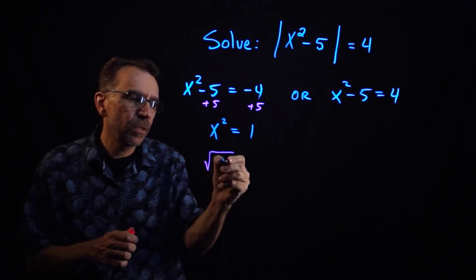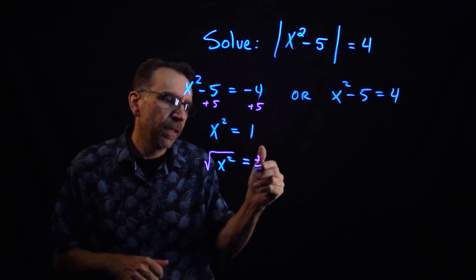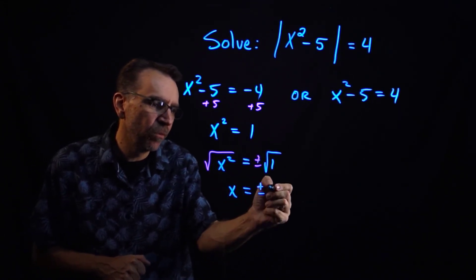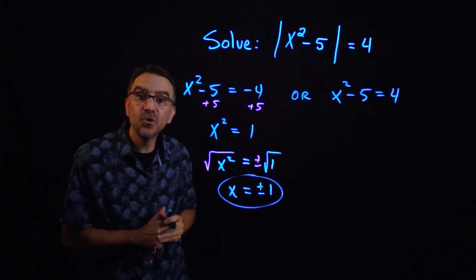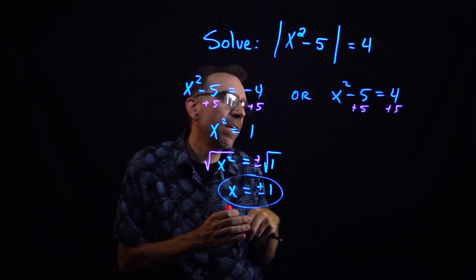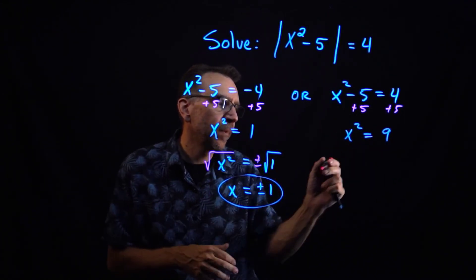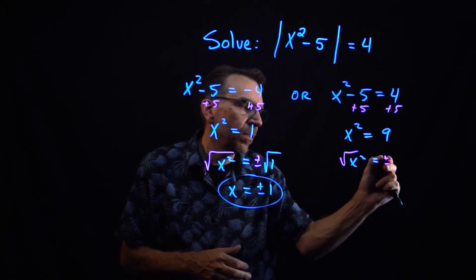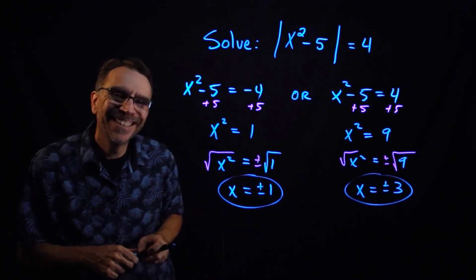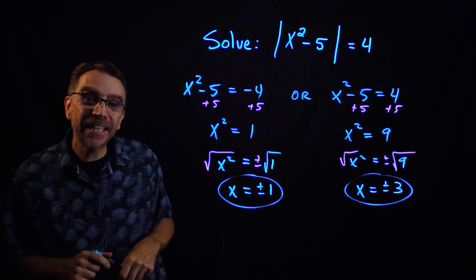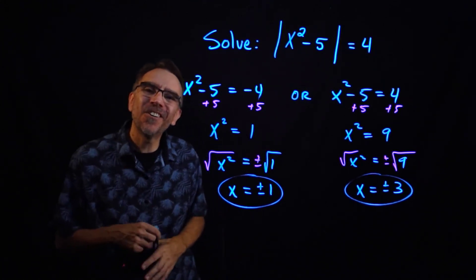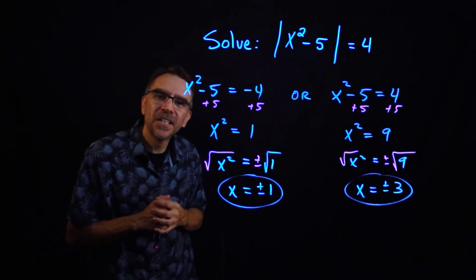Taking the square root of both sides — remembering the plus or minus — gives x equals plus or minus the square root of 1, which is plus or minus 1. That gives two solutions. For the second branch, adding 5 gives x squared equals 9. Taking the square root gives x equals plus or minus 3. So with a quadratic inside the absolute value we get four solutions total. Good luck!